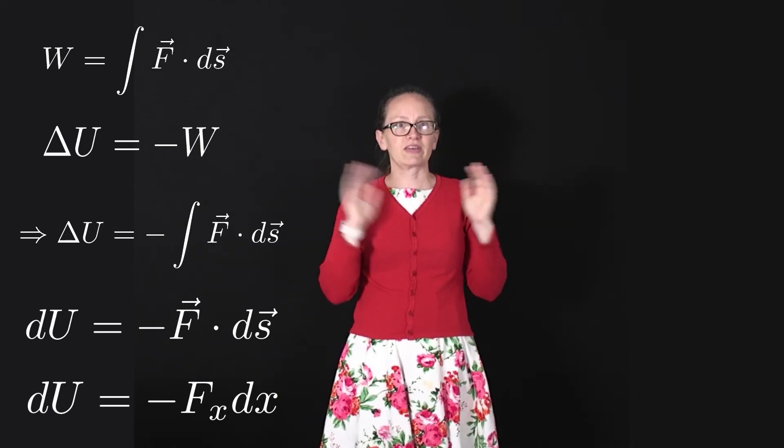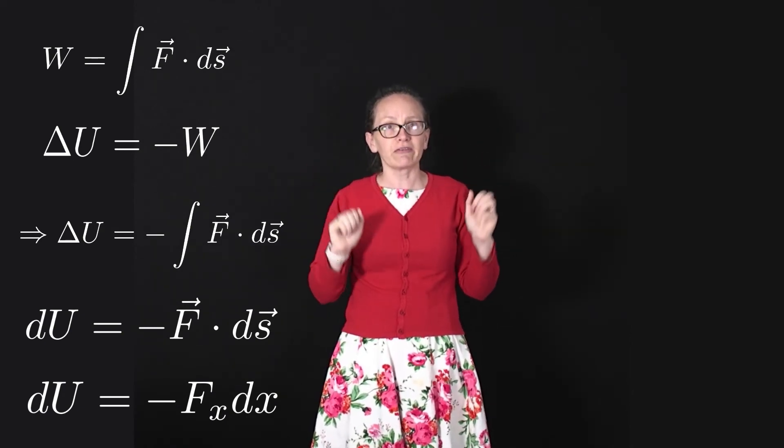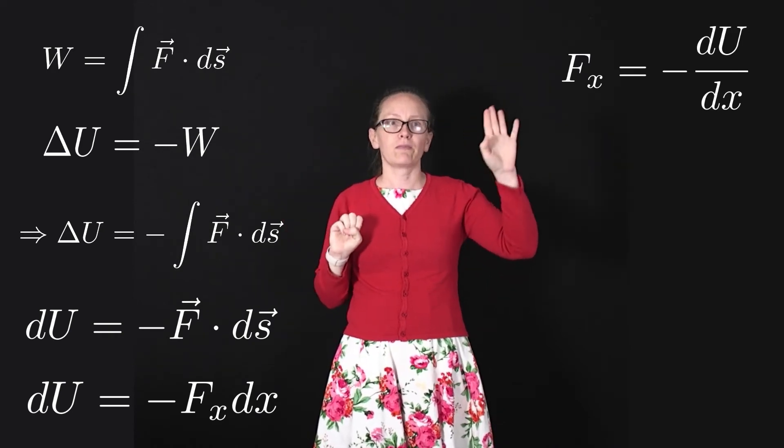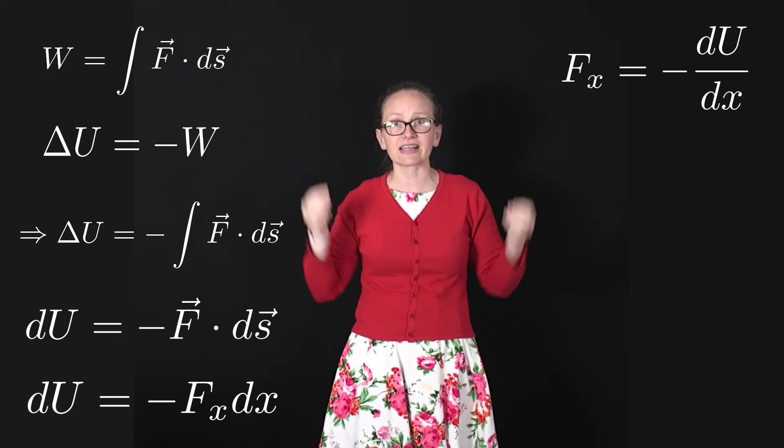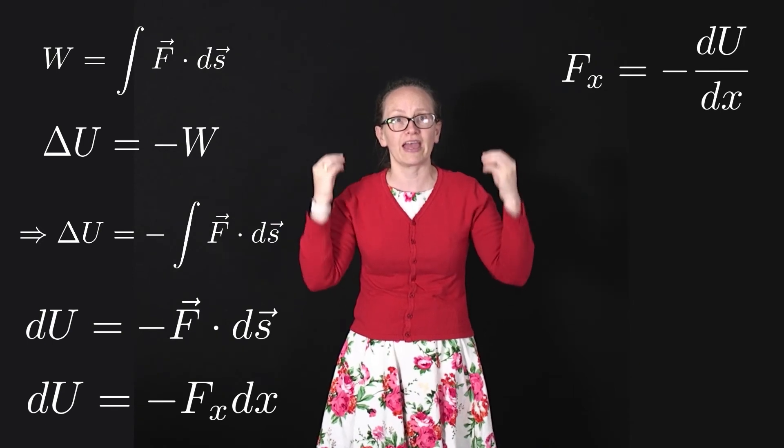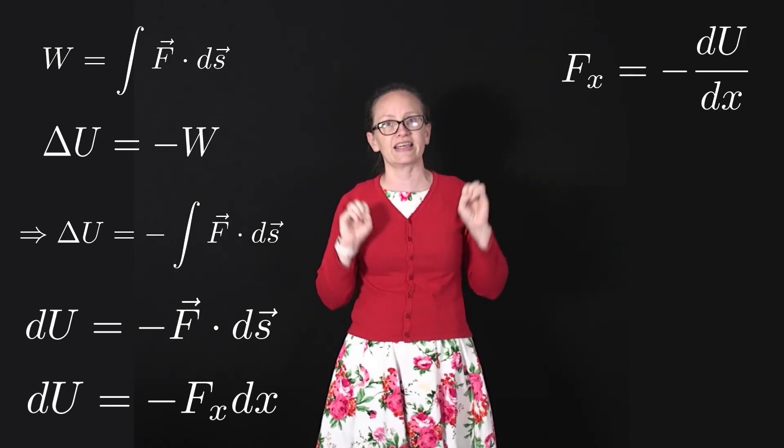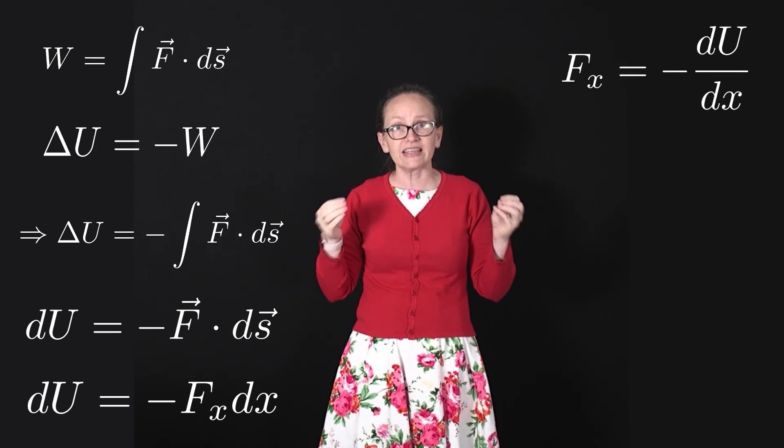But in the case where it's just moving in the x direction, we can rearrange this and write dU/dx is equal to minus F_x. And dU/dx, that's just the derivative of x. So this tells us how we can get the force acting upon the object in the x direction.